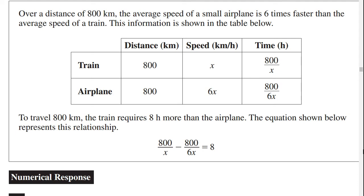Over a distance of 800 kilometers, the average speed of a small airplane is 6 times faster than the average speed of a train. Each thing is going to travel 800 kilometers at a different speed. The time for the train to travel is 800 over x, and the time it takes for the airplane to travel is 800 over 6x. The difference between the two times is 8 hours — the train requires 8 more hours than the airplane.